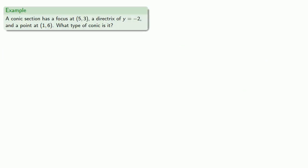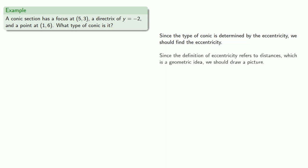So, for example, a conic section has a focus at (5, 3), a directrix of y equals negative 2, and a point at (1, 6). What type of conic is it? Since the type of conic is determined by the eccentricity, we should find the eccentricity. And, since the definition of eccentricity refers to distances, which is a geometric idea, we should draw a picture.